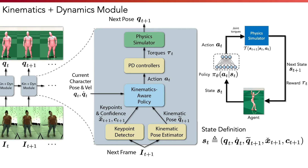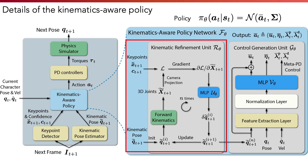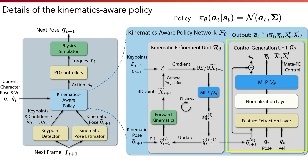This whole process can be looked at in the context of reinforcement learning, where we use the kinematics-aware policy to control the character agent inside physics simulation, and assign a reward to the agent based on how the generated motion aligns with the ground truth. Inside the kinematics-aware policy, we perform kinematics reasoning with a kinematic refinement unit that iteratively refines the pose estimates based on the keypoints. The refined pose is then used by a control generation unit to produce control actions of the character agent.